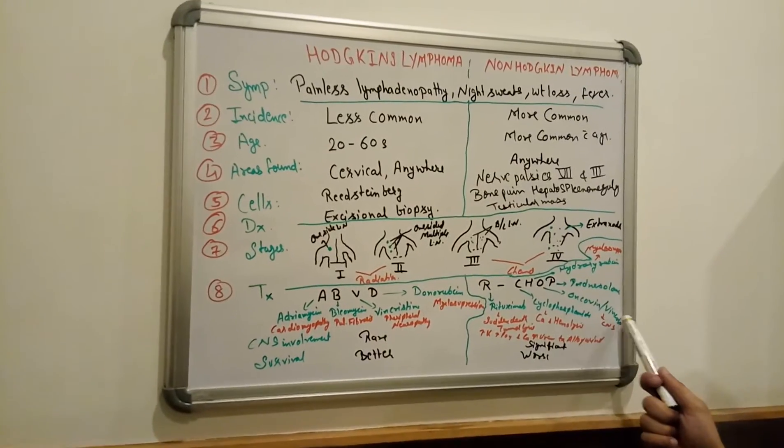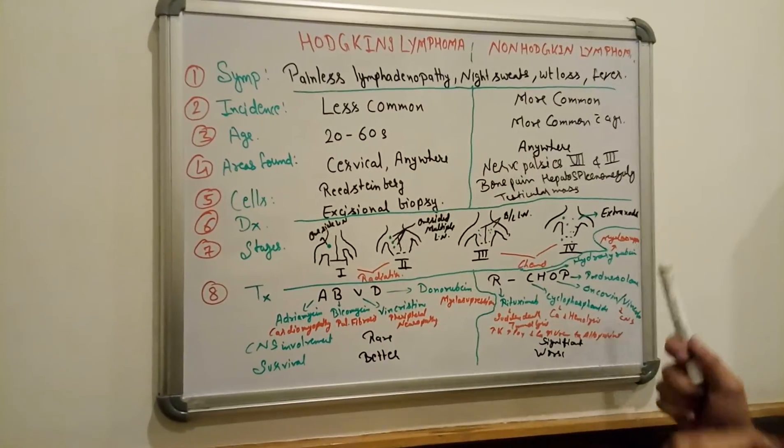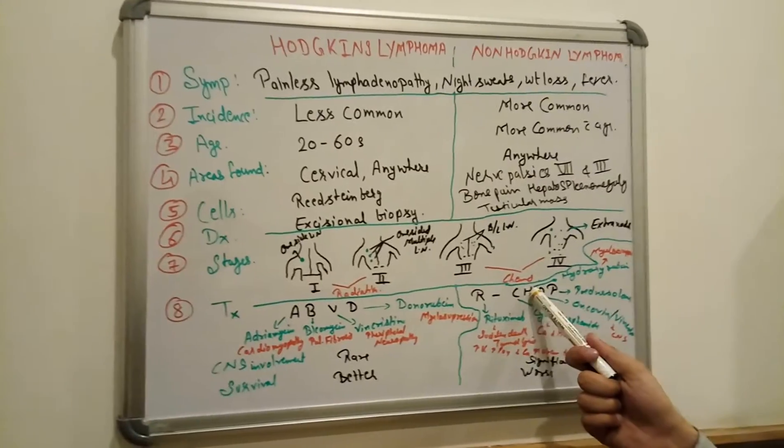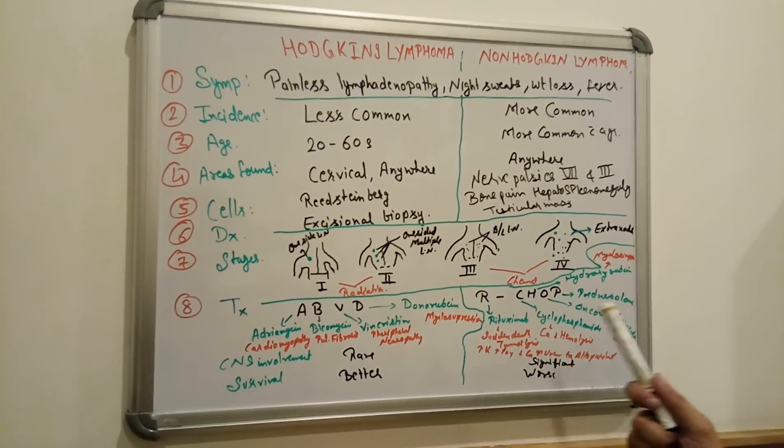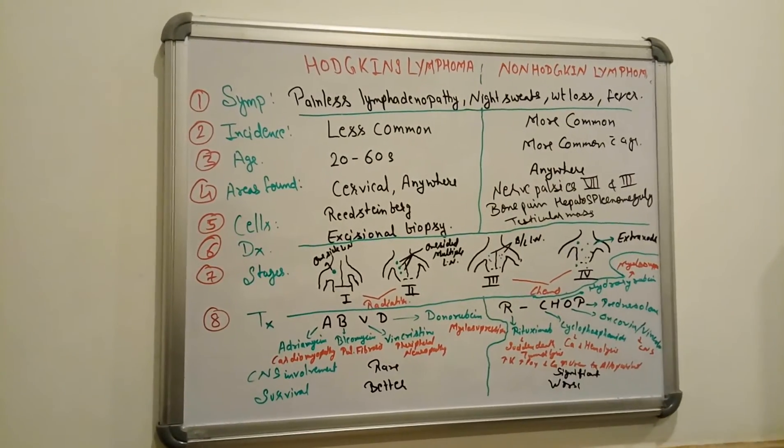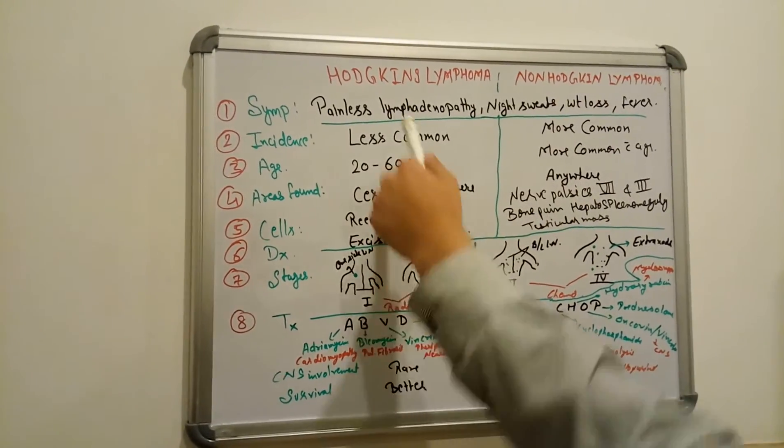O for Oncovin and Vincristine. It causes CNS - already we know CNS peripheral neuropathy. H for Hydroxydaunorubicin. It causes myelosuppression. We already seen here. And P for Prednisone. But CNS involvement we see.